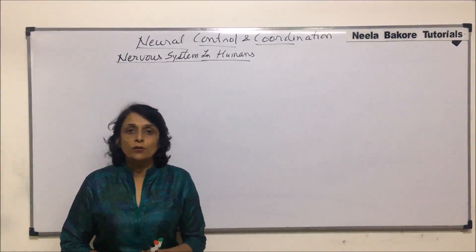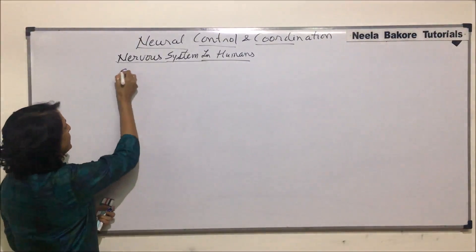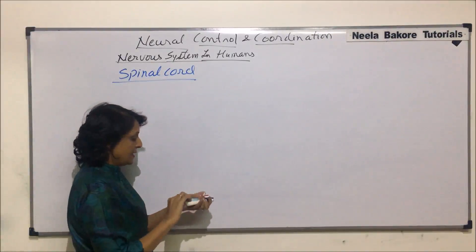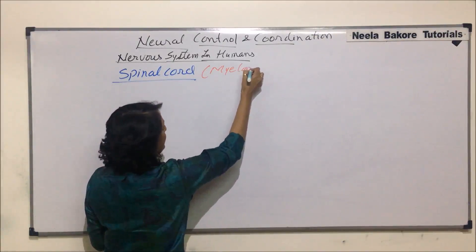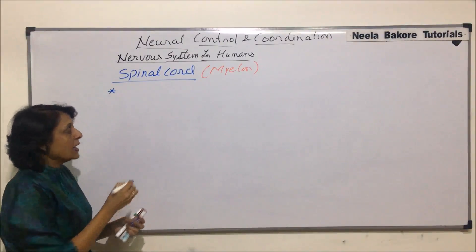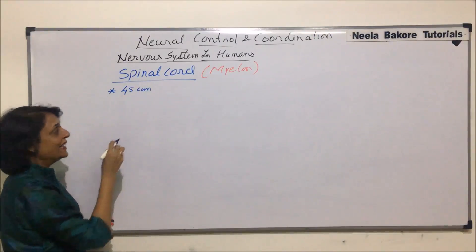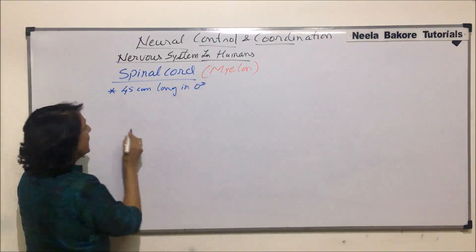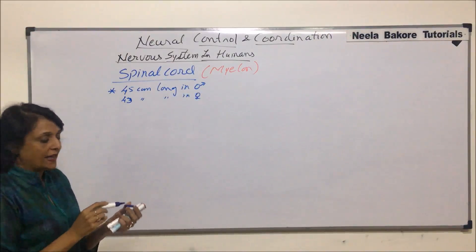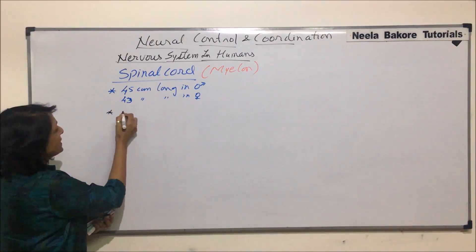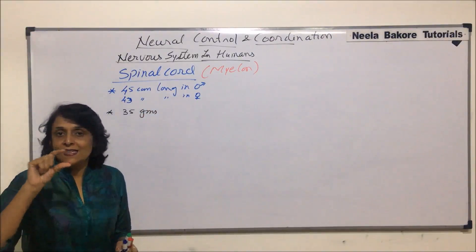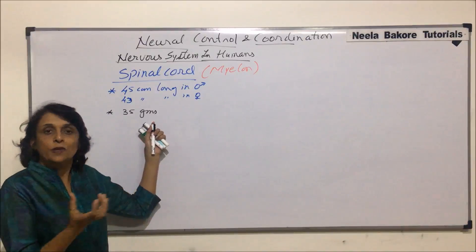In this segment, we'll talk about the next part of the CNS, that is the spinal cord. Spinal cord is also known as myelon. It is about 45 centimeters in length in males and slightly shorter, about 43 centimeters long in females. It weighs about 35 grams approximately. So length is slightly variable between males and females, and the weight is about 35 grams.